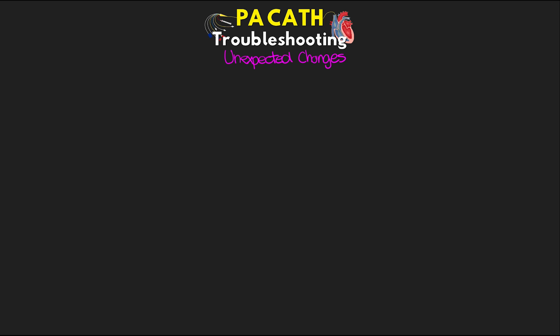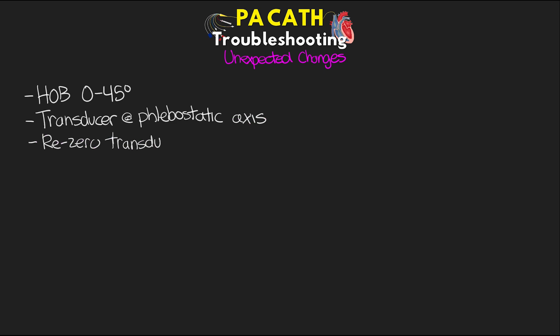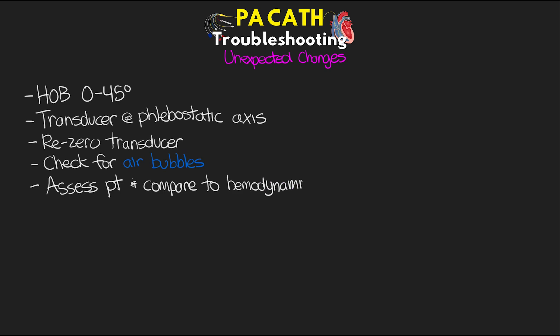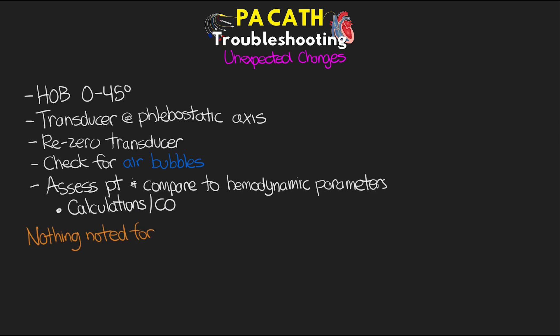The next troubleshooting scenario is when you have any unexpected changes in any of the pressures — right atrial pressure, pulmonary artery pressure, or wedge pressure. If you notice any change in waveforms or values that aren't explained by anything happening clinically, first make sure that the patient's head of bed is anywhere from flat supine to 45 degrees and that the transducer is leveled at the phlebostatic axis. Re-zero the transducer and check for any bubbles. Assess your patient and compare to the hemodynamic parameters you're seeing, including getting cardiac output calculations if needed. If nothing erroneous is causing the changes, follow standing orders for fluids, pressors, and medications, and notify the provider.